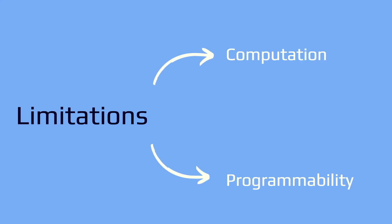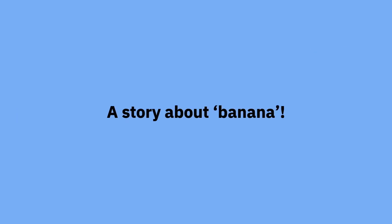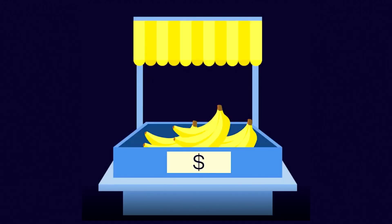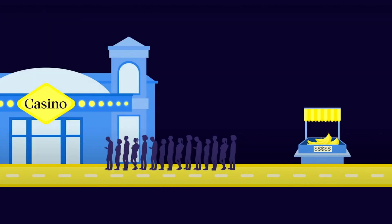What we are trying to solve as Cartesi rollups are two main challenges: computational scalability and programmability. Before talking about how we are fixing it, let me tell you a quick story — it's about a banana, not a blockchain. The banana doesn't have to cost ten times more just because a casino down the road opened up and became very popular.